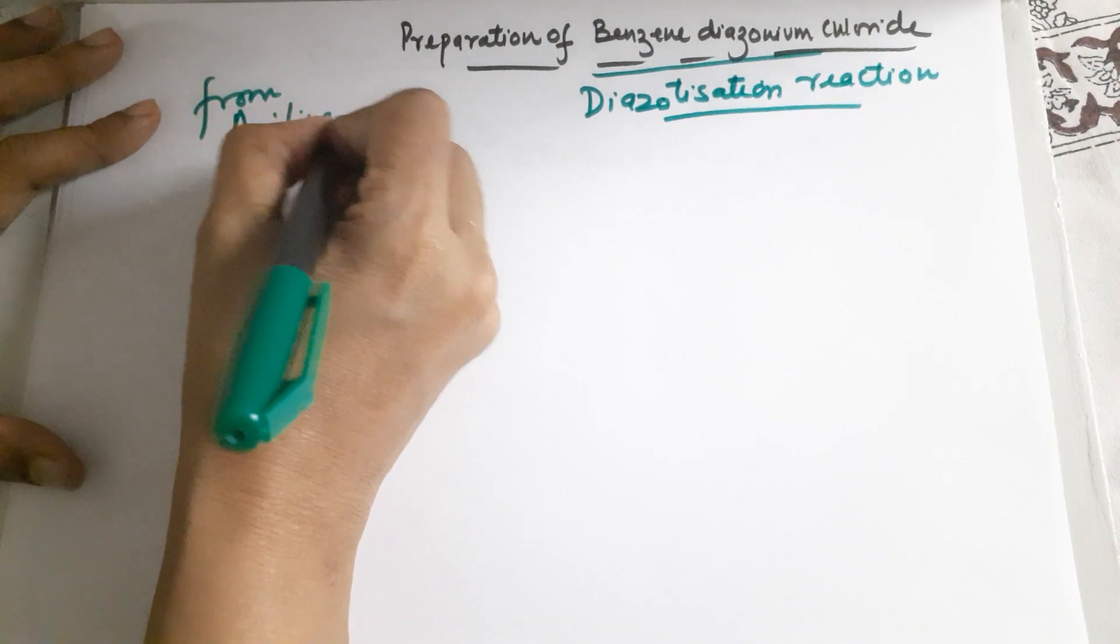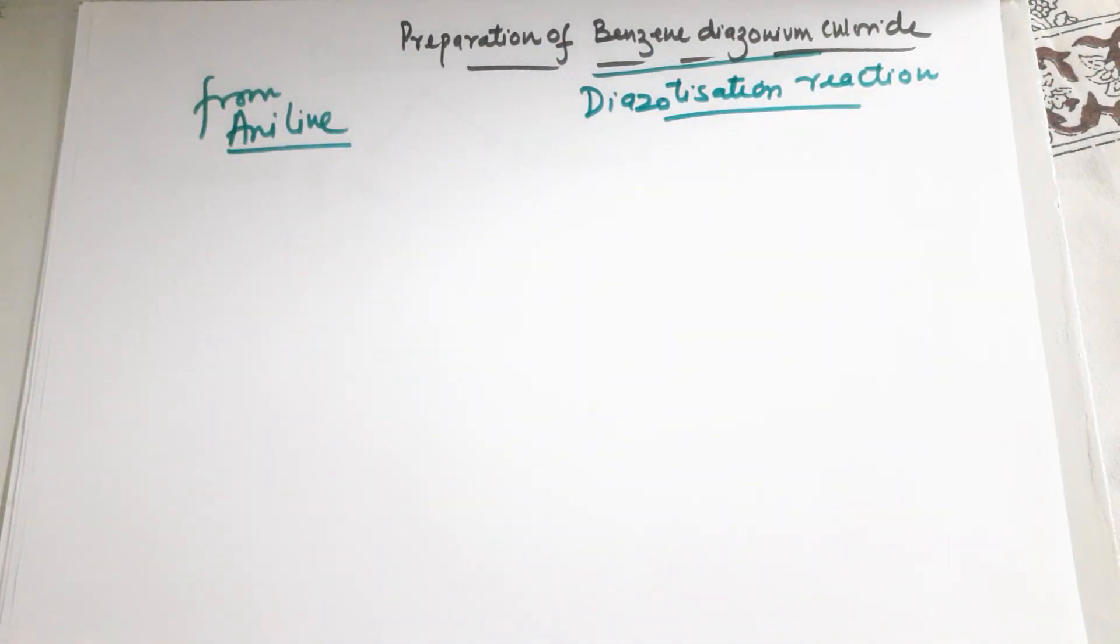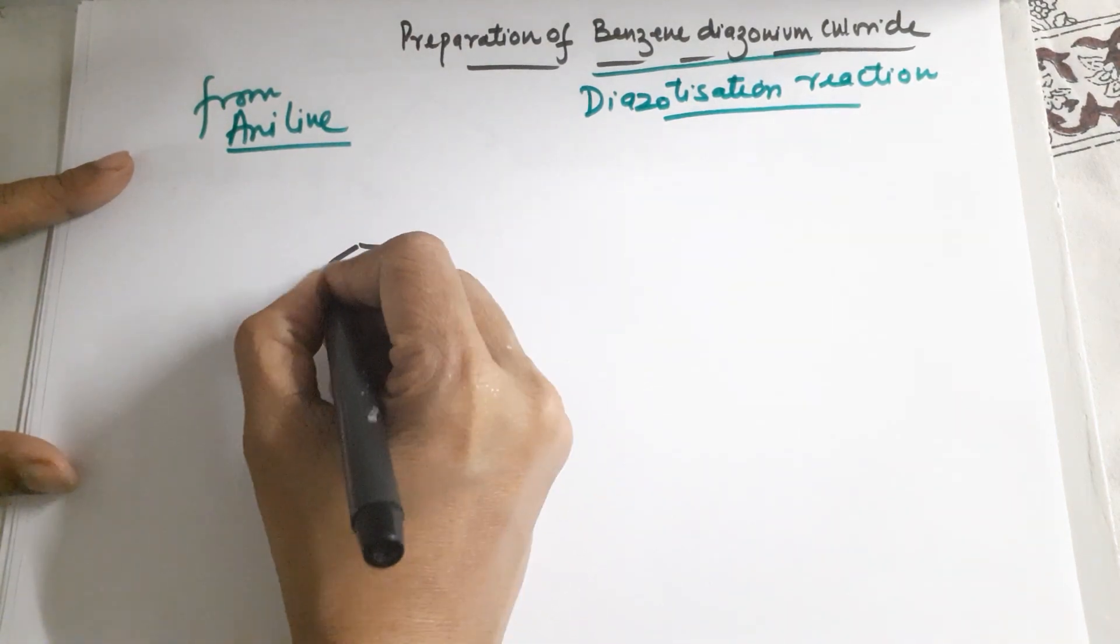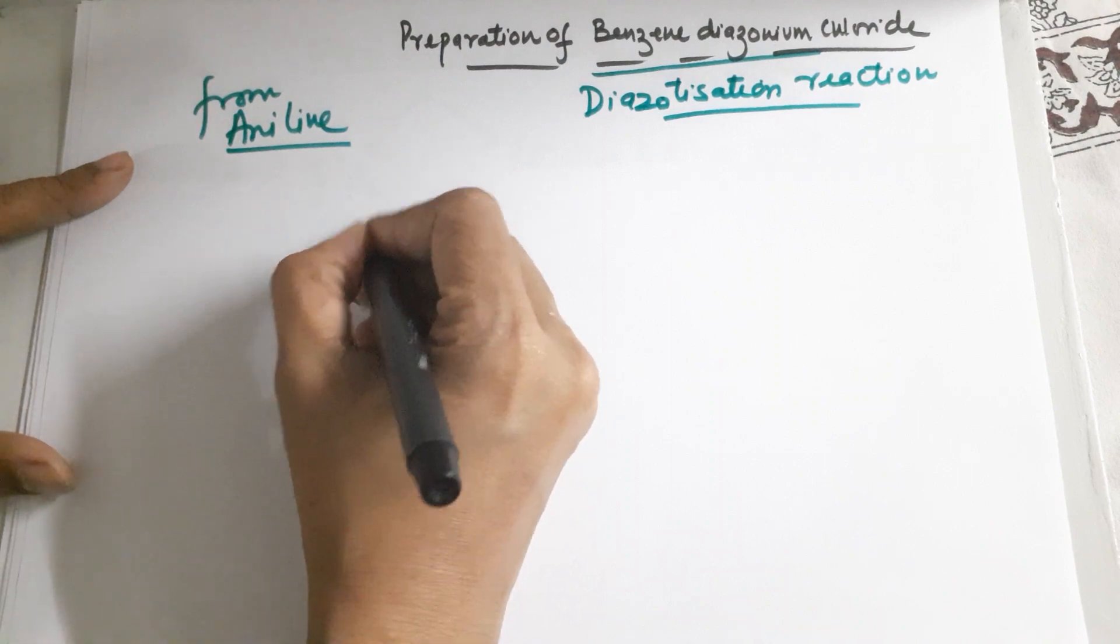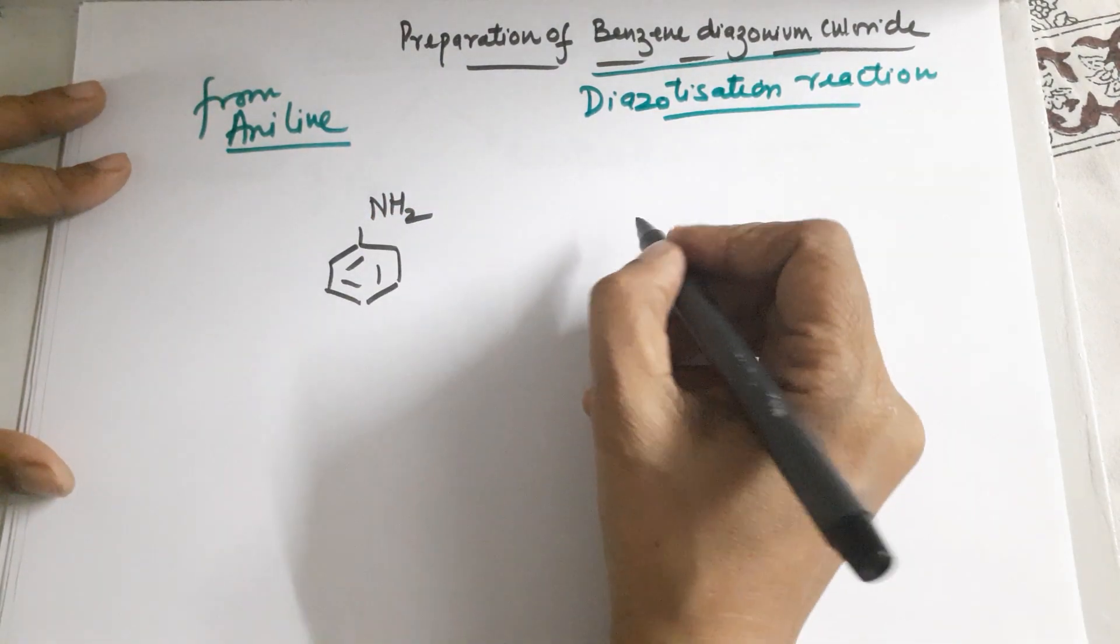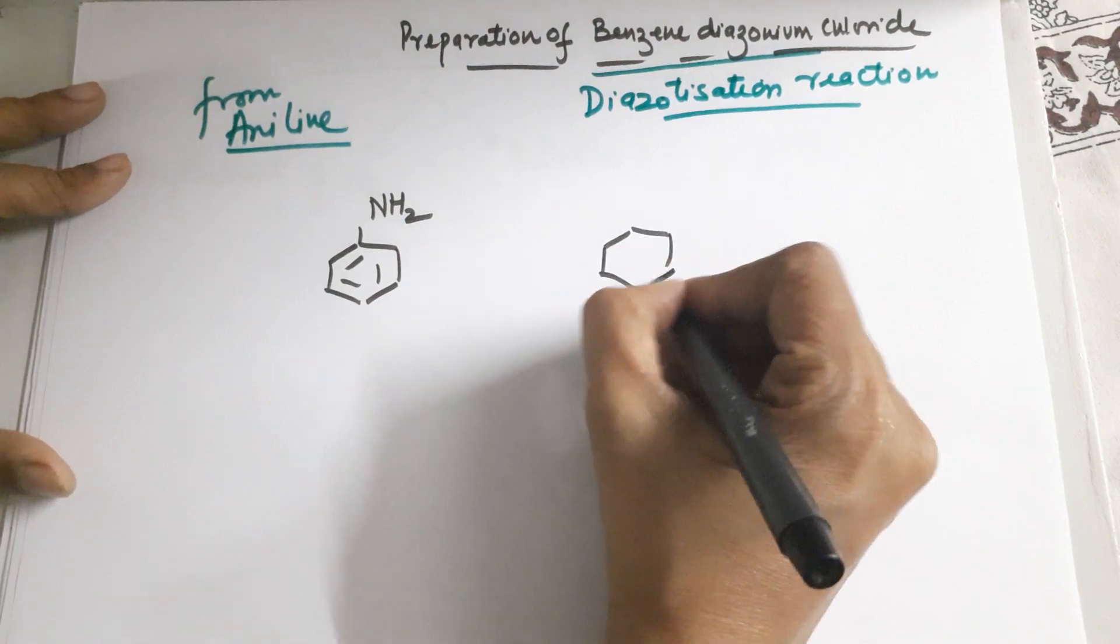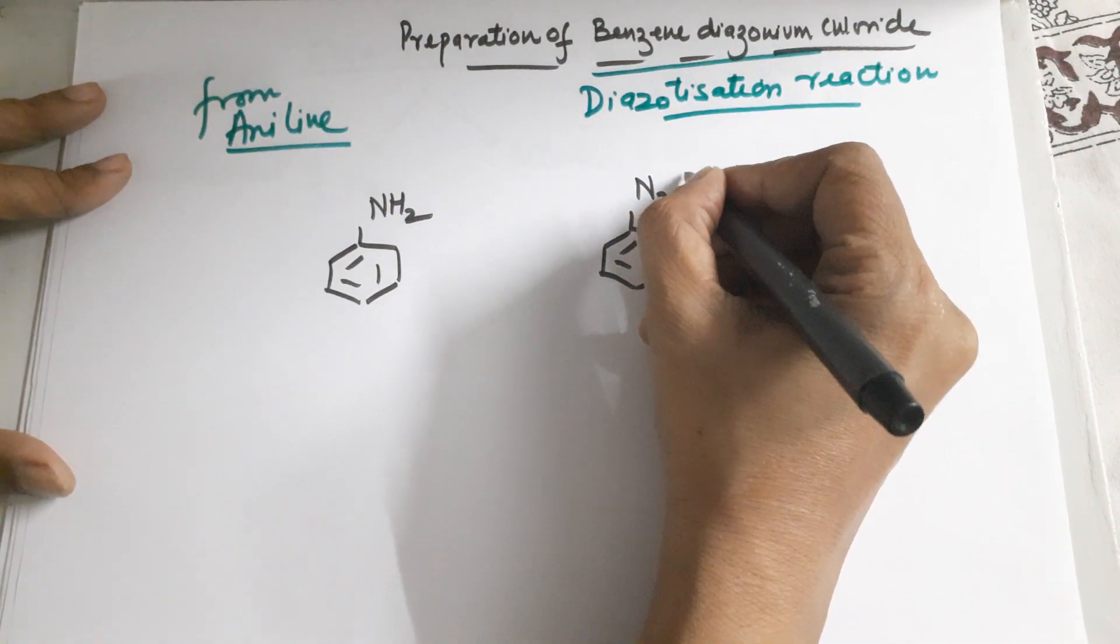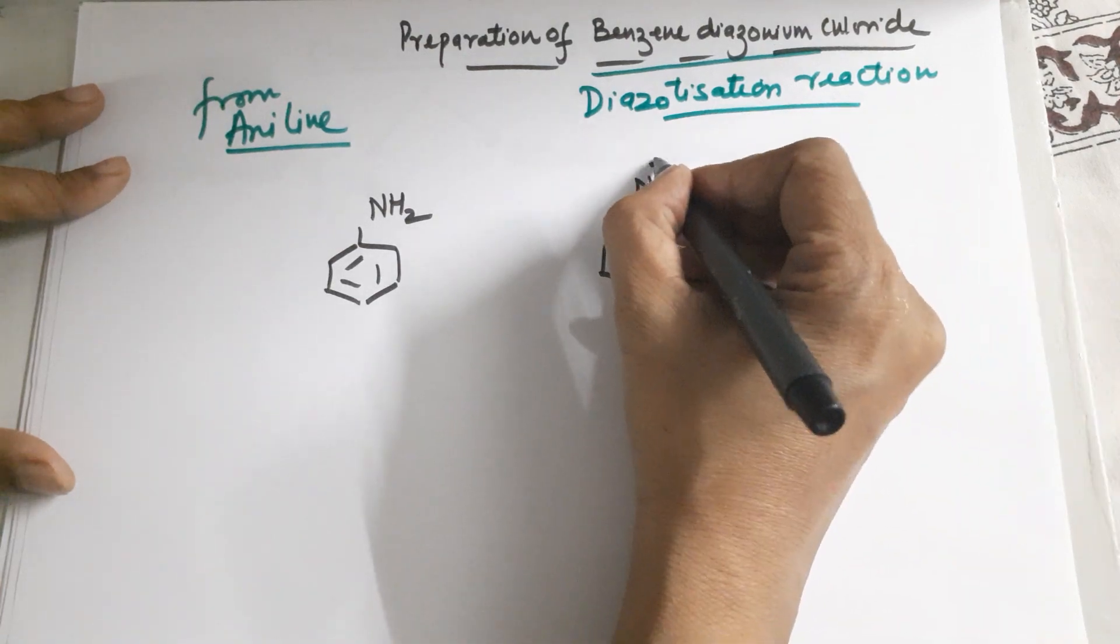So we begin with aniline. Aniline is benzene with NH2 on it. This is your aniline. And what we need to prepare is the benzene diazonium salt, which is N2+ Cl-. This is your benzene diazonium salt.